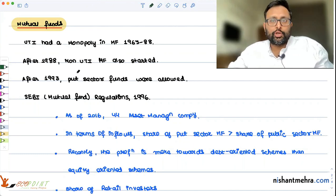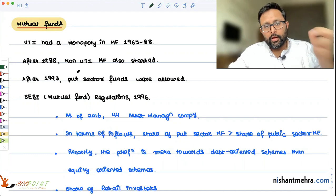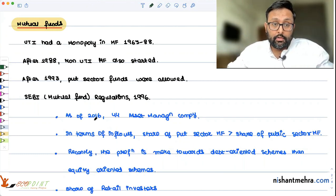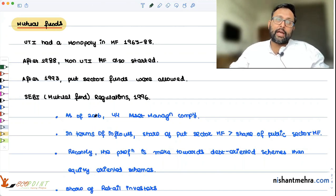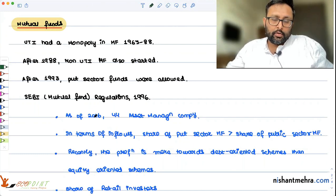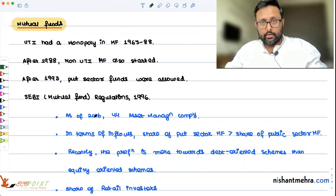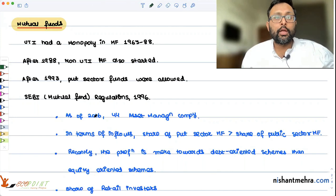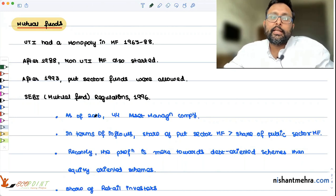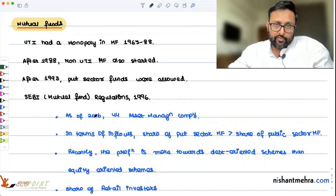If you look at the growth and the current scenario, as of March 2016, there were 44 asset management companies, basically mutual fund companies. The share of the private sector mutual funds is more than the share of the public sector mutual fund. People can invest in mutual funds which are more equity oriented or more debt oriented. Recently, the authors say that the preference is more towards the debt oriented mutual funds vis-a-vis equity oriented mutual funds.